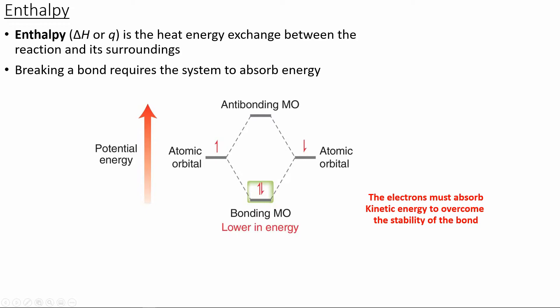To begin with, we'll talk about enthalpy. Enthalpy is the heat energy exchanged between reactions and its surroundings. When we make or break bonds, we're going to have transfers of energy between the molecules. Specifically, when we're breaking a bond, that's going to require the system to absorb energy, and the electrons must absorb the kinetic energy to overcome the stability of the bond. So in order to break a bond, we're going to have to have some sort of input of energy into the system.